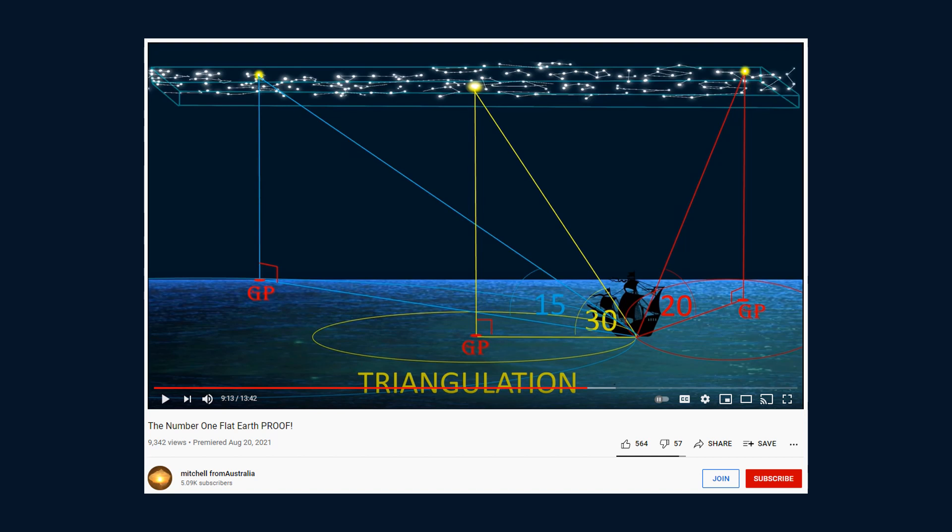So again, celestial navigation could work on a flat Earth, and since all of these are right triangles, they are correct in saying that this would be a form of triangulation.